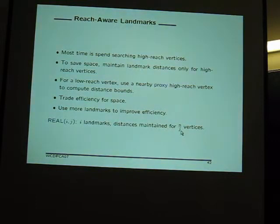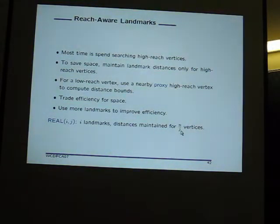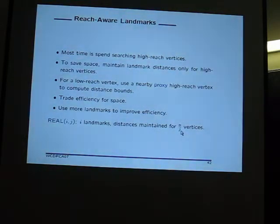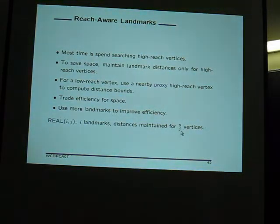Since every vertex has a high-reach vertex nearby, the extra distance is relatively small, so the quality of the lower bound won't be too bad, except for very short distances. The big reason not to have separate landmark sets for different vertices is you may lose feasibility — in general, potentials must be globally consistent, somewhat like a modern internet with each-to-each connections at the top level and more tree-like structure below.